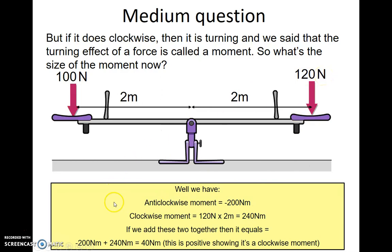If we add these two together, then we'll find out, just like we did with resultant force, that there will be a resultant moment. In this case, it's plus 40 newton meters. This is positive, showing it's a clockwise moment. And that's what we would have thought. 120 here, 100 here. So it's going to move down this way, clockwise.